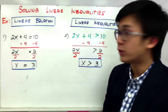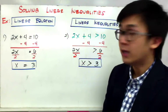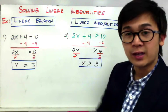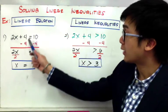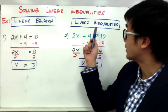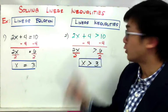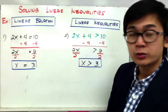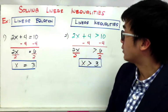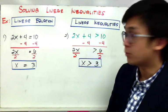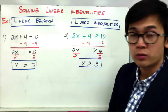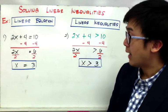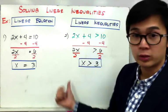What is the difference when we solve a linear inequality instead of a linear equation? I'm going to use the same variables, coefficients, and constants, but change the equal sign to a greater than symbol. So now I have 2x plus 4 greater than 10. Just like before, subtract 4 on both sides and divide both sides by 2, giving us x greater than 3. The steps are the same — the only important difference is the symbol we're using.